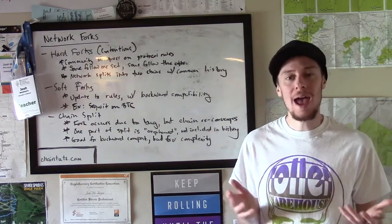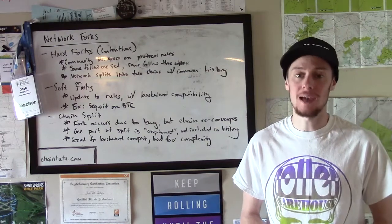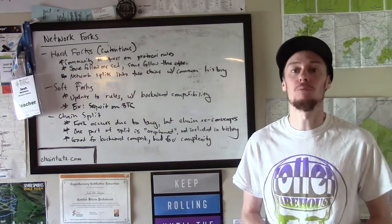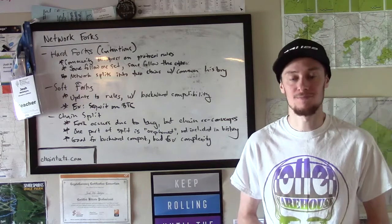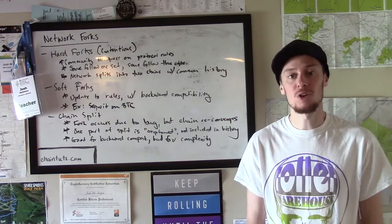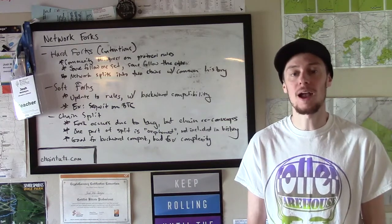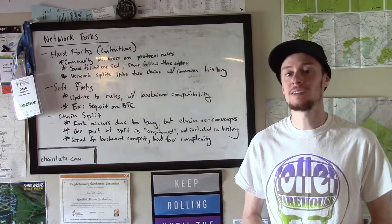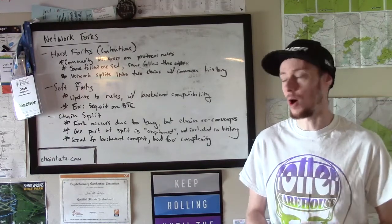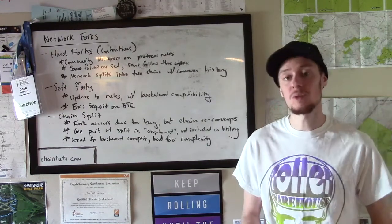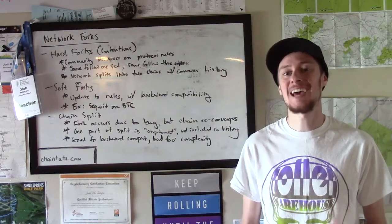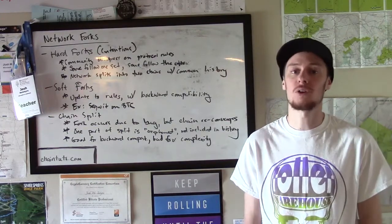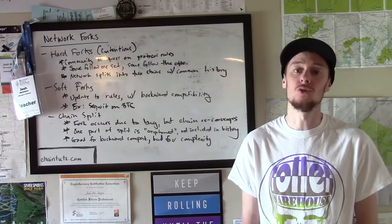But what happens if the rules change? This is a part of what happens when blockchain forks occur. So let's talk about the first kind of fork, the most common or most publicly known fork known as a hard fork. These are also sometimes referred to as contentious hard forks, and these are the kind of hard forks that create new cryptocurrencies.